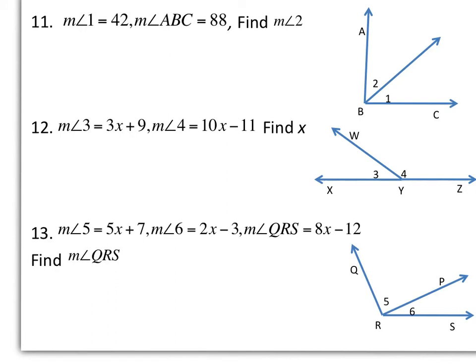All right, let's do some examples using that angle addition postulate. So in our first figure on the right, we know that angle 1 is 42 degrees, so I'm going to mark that, and the measure of angle ABC, so the entire angle here, is 88 degrees. Now you can't assume that angle ABC is 90 because it looks like 90. Very important thing in math not to assume. It's actually only 88 degrees. All right, so we want to find the measure of angle 2. Well, going by the angle addition postulate, I know that the measure of angle 1 plus the measure of angle 2 will equal the measure of angle ABC.